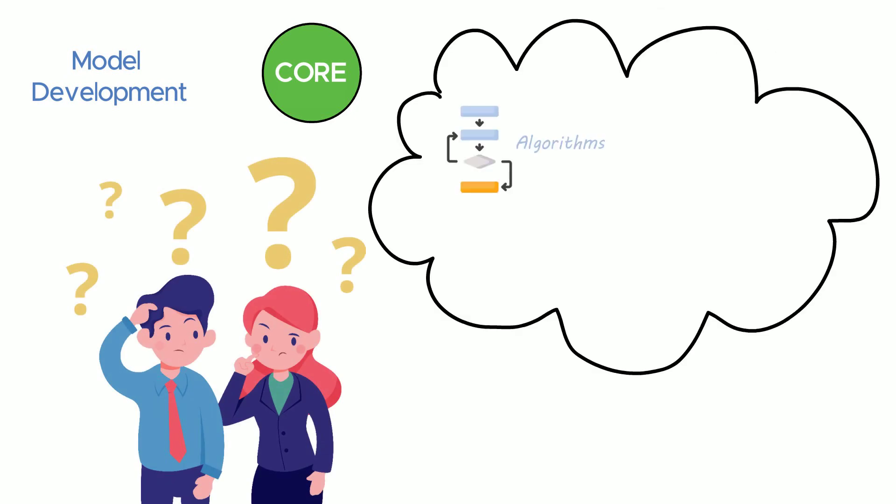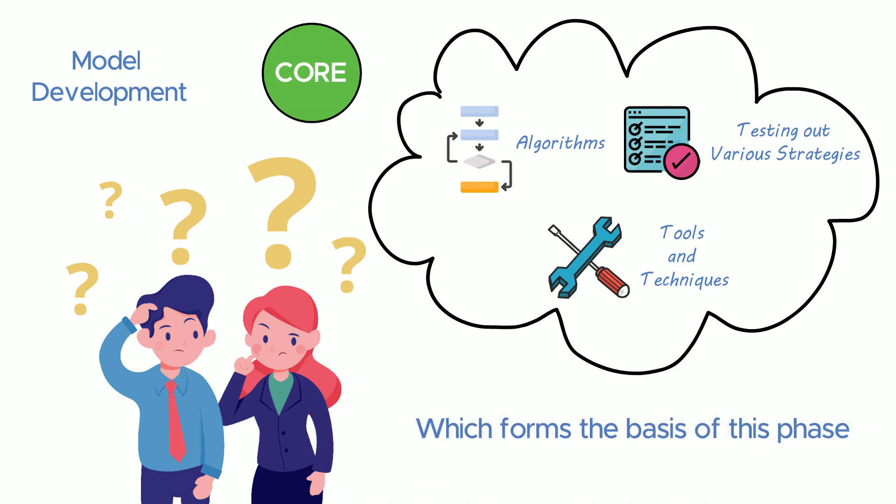This is the core of a data science life cycle. When most people think about data science they think algorithms, testing out various strategies, tools and techniques which forms the basis of this phase.